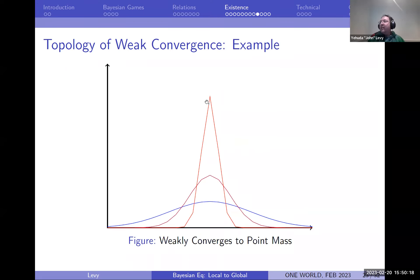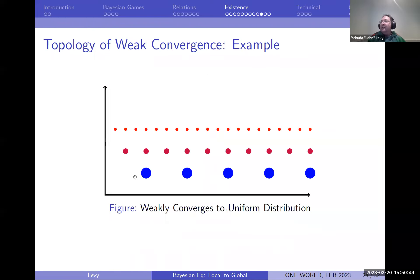You'd want these measures to converge to a point mass. If you use too strong a notion of convergence, like total variation distance, they can't converge to a point mass because each of these gives the point mass measure zero. But with weak convergence they do converge, because if you take a continuous function and integrate it with respect to sharper and sharper distributions, those integrals converge to the value of the function at that point.